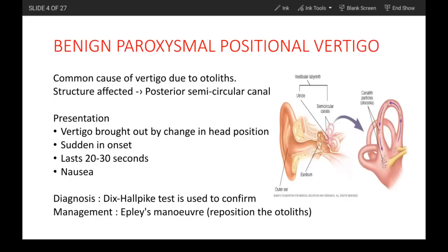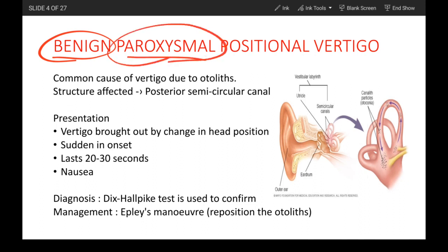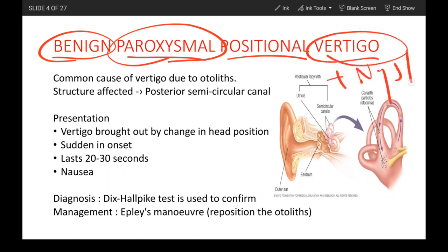Firstly, about benign paroxysmal positional vertigo. Benign means this is not a dangerous condition — it is a simple condition which is easily treatable. Paroxysmal means it comes on suddenly and goes away soon. Positional means it is precipitated with any change in head position. Vertigo is the main symptom, and the patient might also have nystagmus, nausea, or sometimes vomiting.